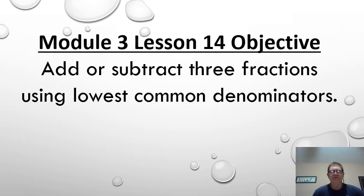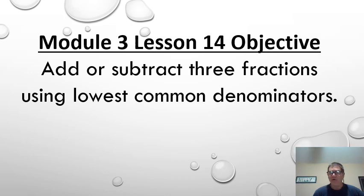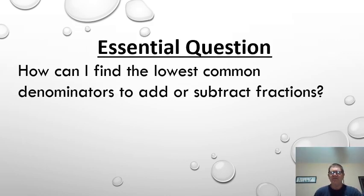Today we're going to be using model 3, lesson 14, and the objective is to add or subtract 3 fractions using the lowest common denominators. We really haven't stressed lowest common denominators so far. What we've been doing is taking the quickest or easiest common denominator by multiplying the two denominators. We're still looking at MAFS 5.NF.1, which is adding and subtracting fractions with unlike denominators. Central question: how can I find the lowest common denominators to add or subtract fractions?